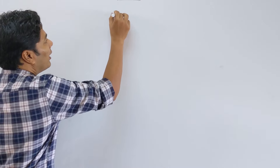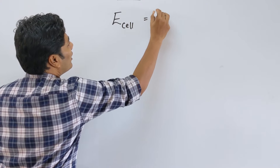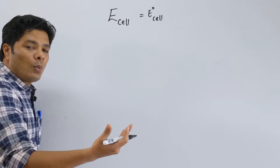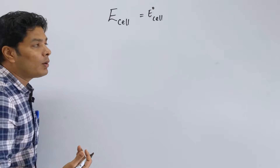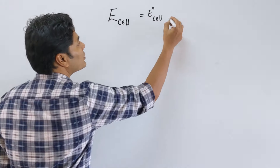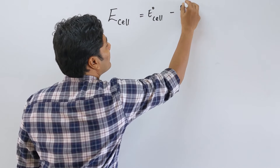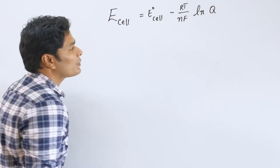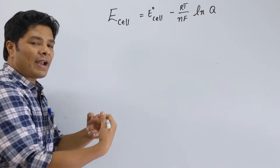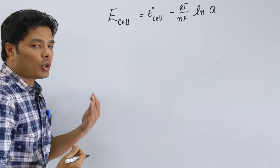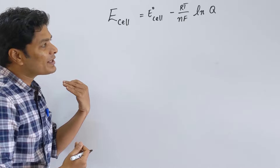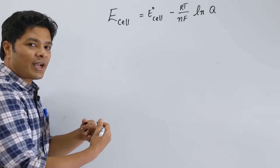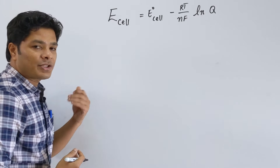The Nernst equation is something that relates your E_cell to your E° cell. E_cell and E° cell are equal when you are looking at 1 molar concentration of your products and reactants. But if they are not 1 molar, you can write: E° cell minus RT/nF × ln Q. Q is nothing but activities of products over activities of reactants raised to the corresponding coefficients — we saw this in the equilibrium chapter. Activities can be replaced by concentrations or pressure.